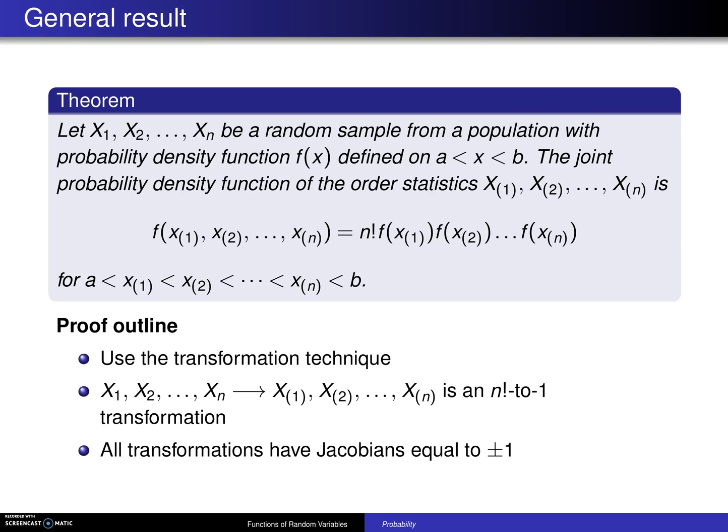The previous two examples are building towards a general result that is given by the following theorem. Let x1, x2, up to xn be a random sample from a population with probability density function f of x defined on a is less than x is less than b.